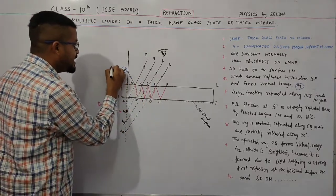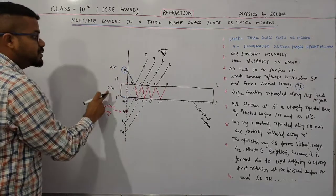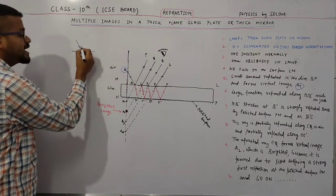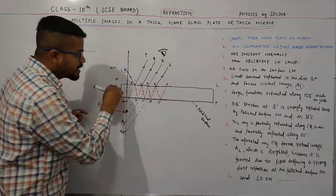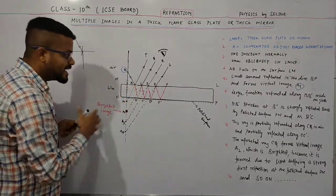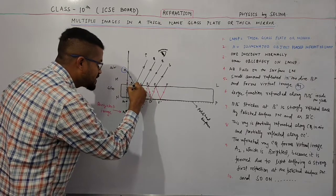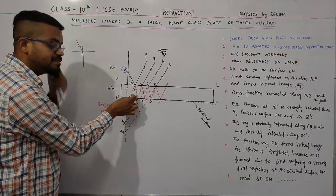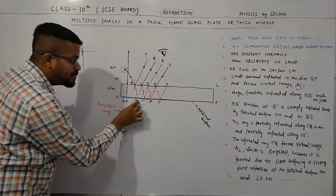The larger fraction of light gets refracted. Light comes from a rarer to a denser medium — this is air and this is glass — so when the light ray comes from rarer to denser it bends towards the normal. So after refraction from surface LM, the ray bends towards the normal and strikes the surface NP at point B'.